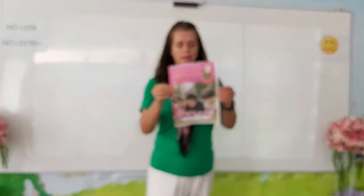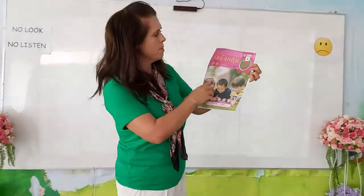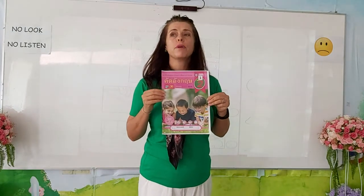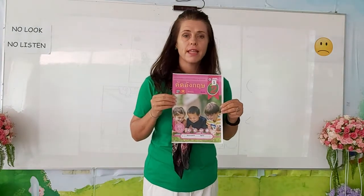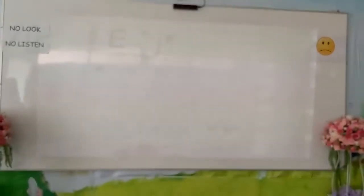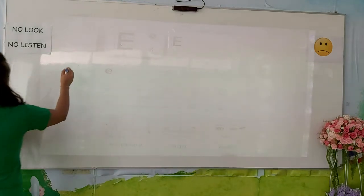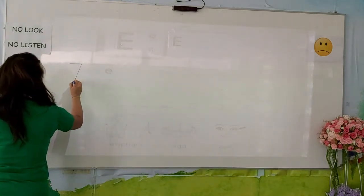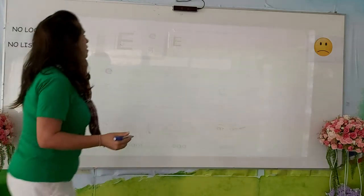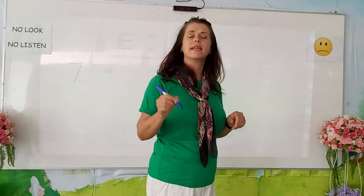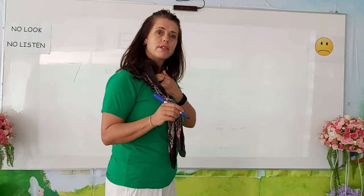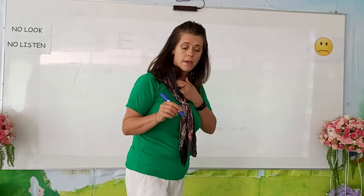Now get your Alphabet Two book and open it on page seven. Today we are going to write the letter E — the capital and the lowercase E. Let's start with the capital E.